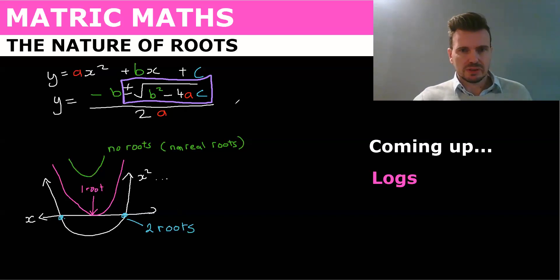Now sometimes those two answers are the same, so like if it was a perfect square. So let's look at that quickly. X squared plus 2x plus 1, you get x plus 1 and x plus 1.